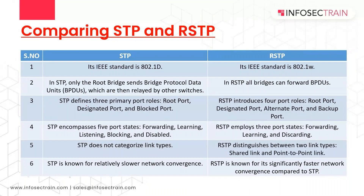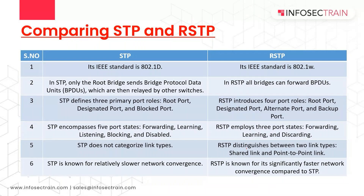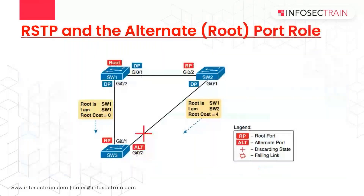STP defines three primary port roles: root port, designated port, and blocked port. RSTP defines: root port, designated port, alternate port, and backup port. STP port states are: forwarding, learning, listening, blocking, and disabled. RSTP port states are: forwarding, learning, and discarding — saving time. STP does not categorize link types; RSTP distinguishes between two link types: shared link and point-to-point link. STP is known for slower network convergence; RSTP is known for significantly faster convergence.